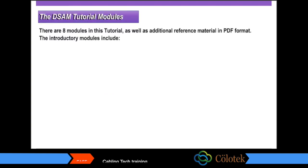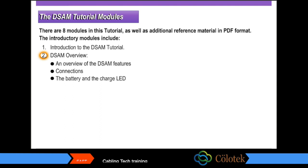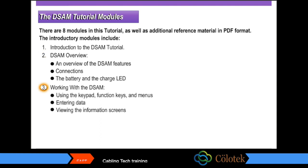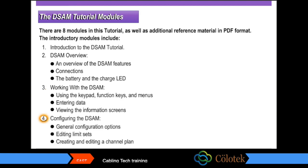There are eight modules in this tutorial, as well as additional reference material in PDF format. The introductory modules include Module 1, this module, Introduction to the DSAM Tutorial; Module 2, DSAM Overview — an overview of DSAM features, connections, the battery, and the charge LED; Module 3, Working with the DSAM — using the keypad, function keys, and menus, entering data, and viewing the information screens; and Module 4, Configuring the DSAM — General Configuration Options, Editing Limit Sets, and Creating and Editing a Channel Plan.